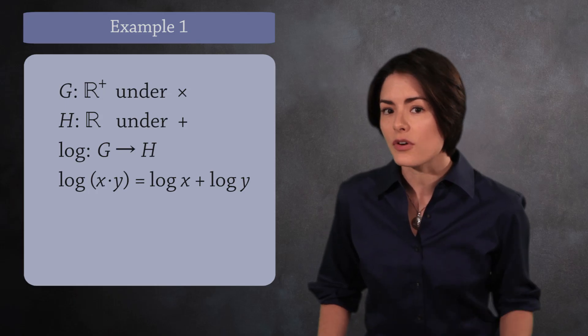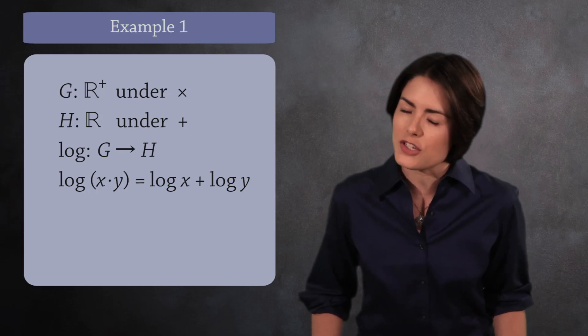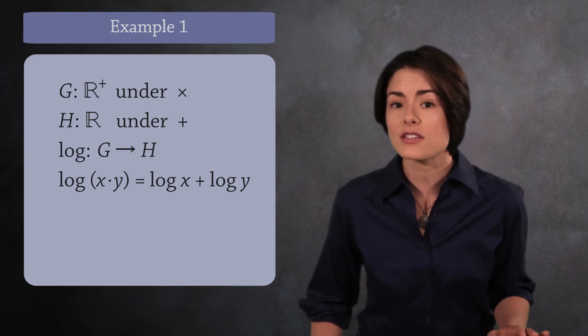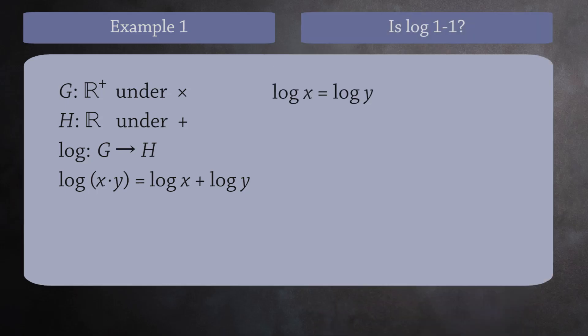To see if this is an isomorphism, we have to test if it's a bijection. Let's first check that this function is one to one. Suppose that log of x equals log of y. Since the logs are equal, e to each power is equal. This simplifies to x equals y, so this function is one to one.